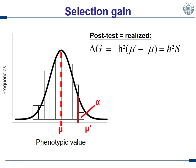The selection gain package optimizes breeding schemes based on the breeder's equation — the selection gain. Just to be sure we all speak about the same thing: assume we have a trait which is influenced by many genes, a quantitative trait.